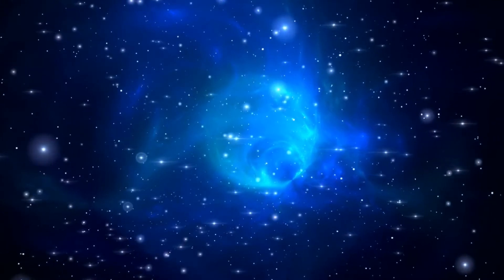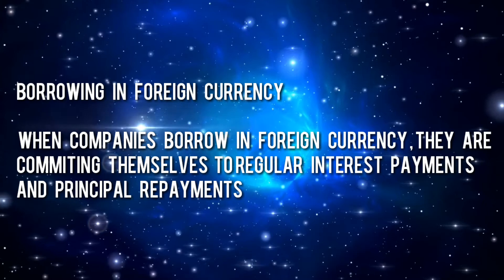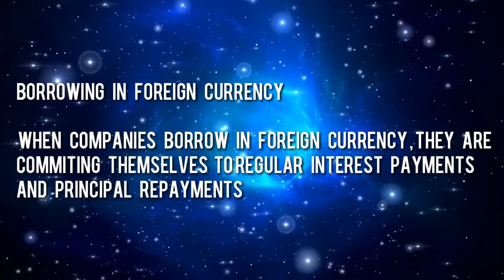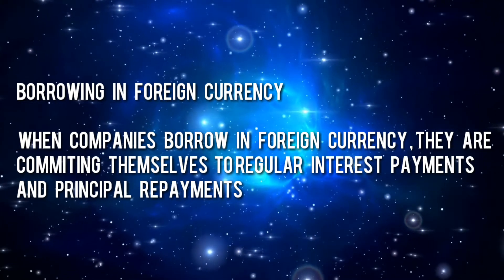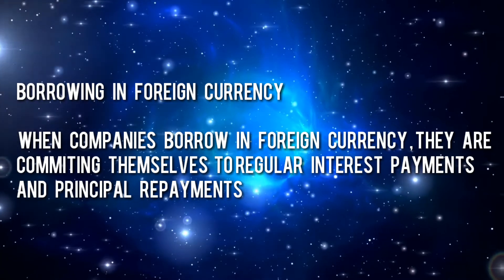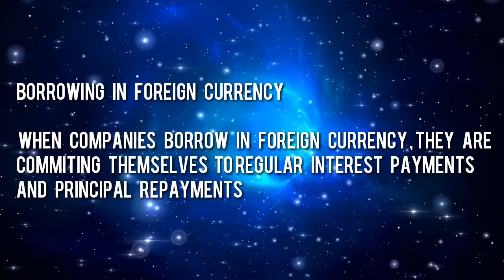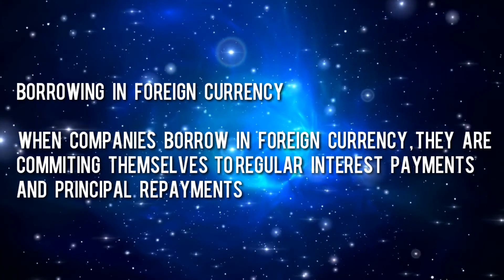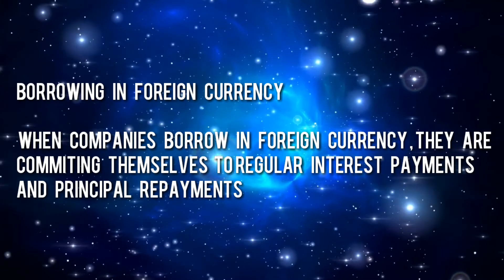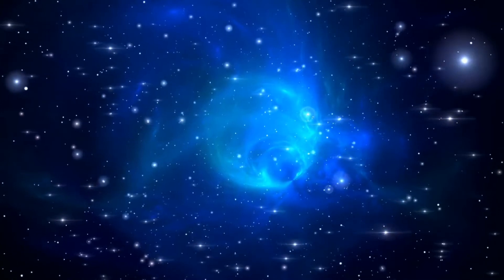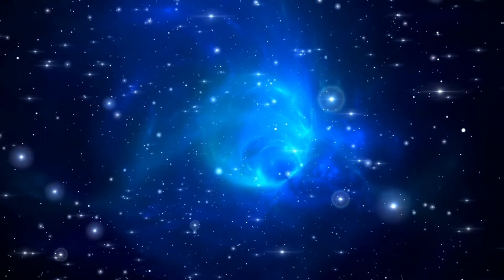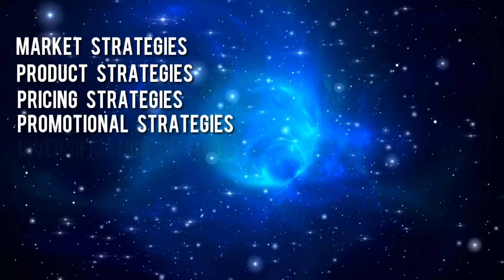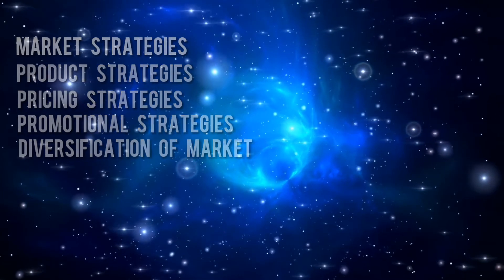When companies borrow in a foreign currency, they commit themselves to regular interest payments and principal repayments, exposing themselves to foreign interest rate risk. This was a serious problem for a number of Eastern companies in the late 1990s — they had borrowed in US dollars or British pounds, and when their currency depreciated, loan repayments became much more expensive. Of course, if your firm takes out a loan in dollars and your home currency appreciates against the dollar, the loan repayments become cheaper. There are also various techniques and marketing strategies for dealing with operating exposure, including product strategy, pricing strategy, promotional strategy, and market diversification — which I will cover in another video.